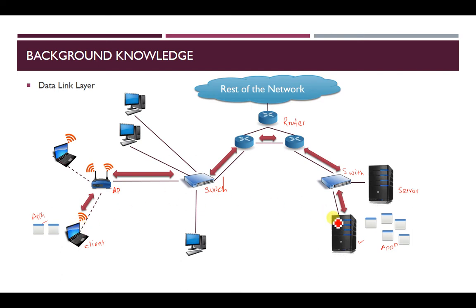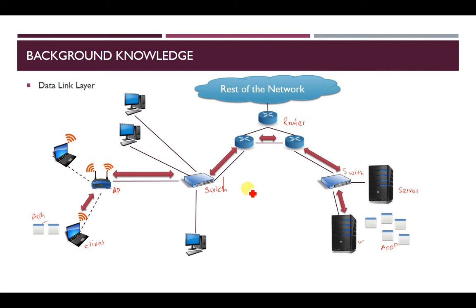The client wants to send data to the server, so he could use the path: client to access point, then access point to switch, switch to router, router to the next router, next router to switch, and then switch delivers data to the server. A TCP connection is made, the path is established, and data gets transferred. This is called node-to-node delivery — from the starting node to the end node through the path.